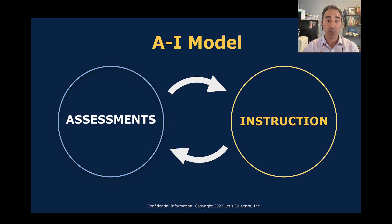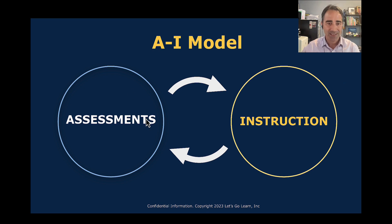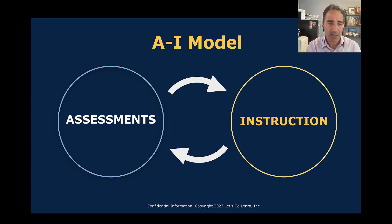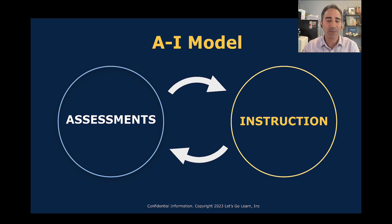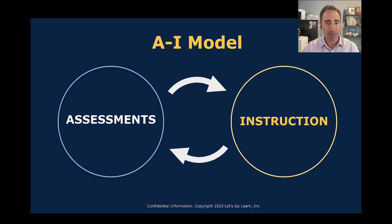This is the model under which most instruction happens: you assess and then use that assessment to deliver instruction. That instruction is reflected on through additional testing. The teacher can adjust what they teach, and then it adjusts your instruction. So there's this assessment-instruction cycle — sometimes informal, sometimes formal — but it's really about getting feedback: did the student learn it? Do I need to re-teach it? This is what we call the AI model.